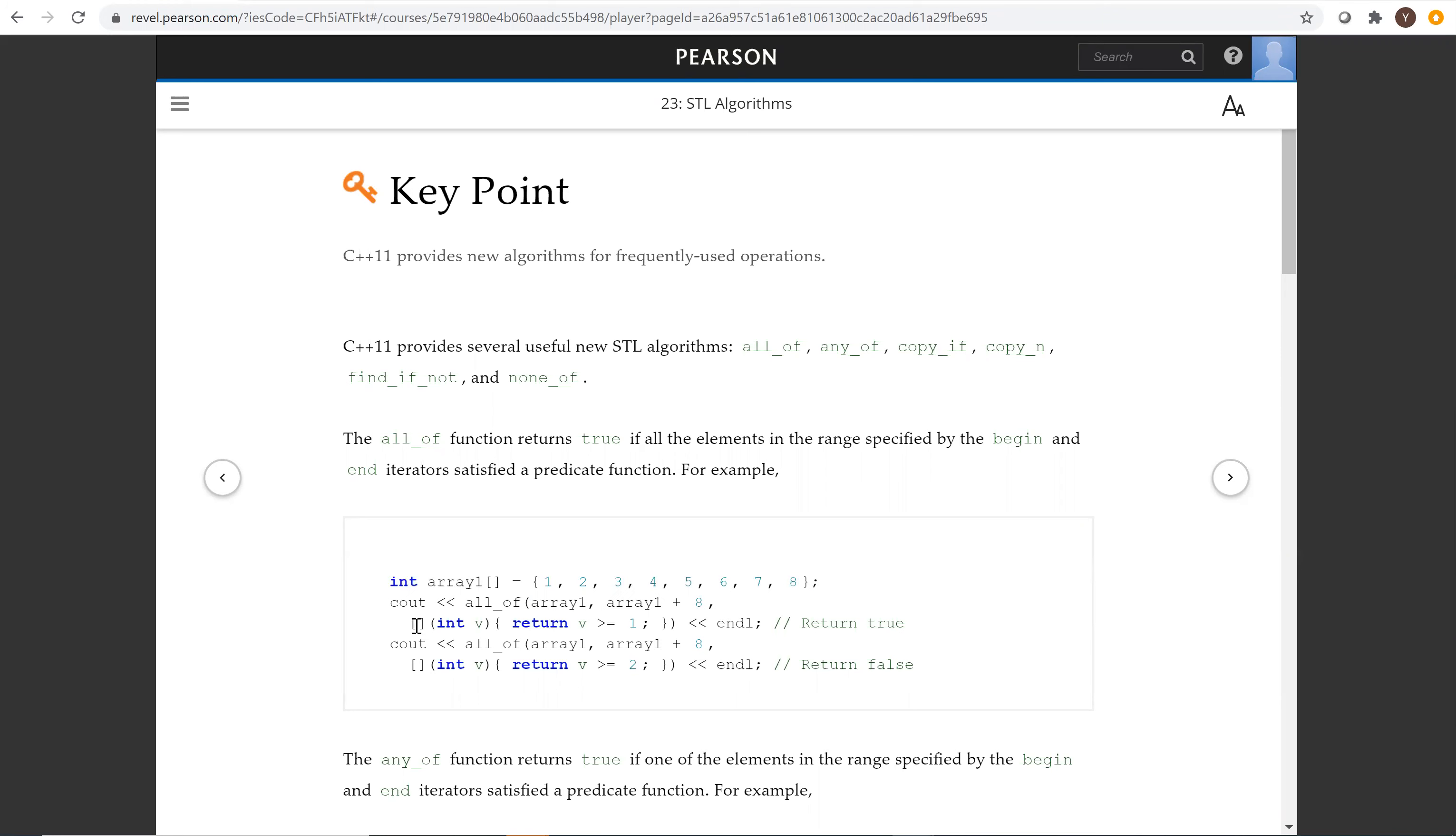Let's look at this function. If every element is greater than or equal to one, then allOf returns true. For the second check, if all elements are greater than or equal to two, return true. That's not the case since there's one here, so the first returns true and this returns false.